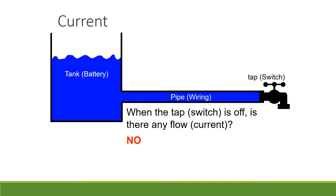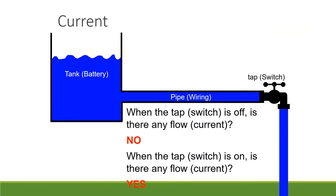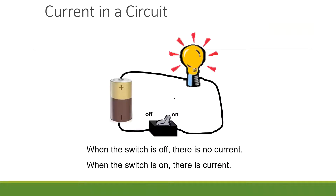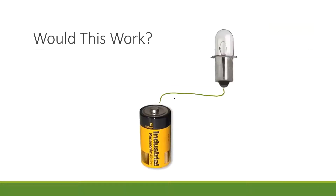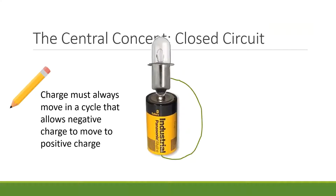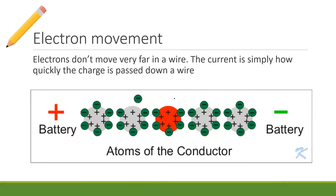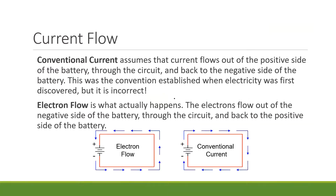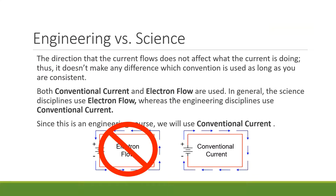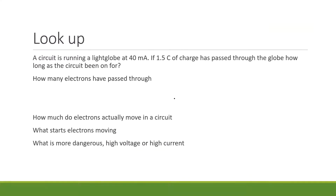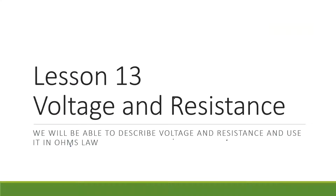There's no current when the switch is open. When the switch is closed there is a current — you've got a flow of electrons, a flow of charge. We talked about how electrons move down a wire; they don't actually move very much but the charge moves very quickly. Then we talked about conventional versus electron flow. So voltage and resistance is a new idea.